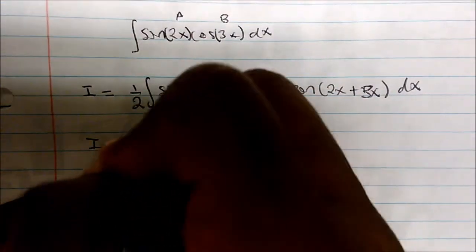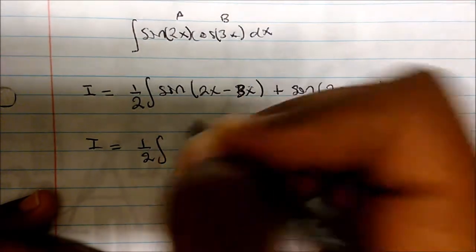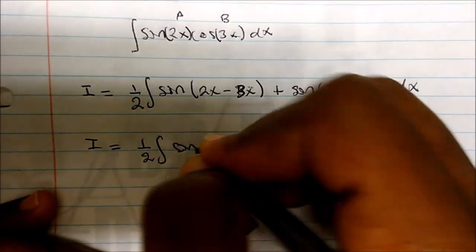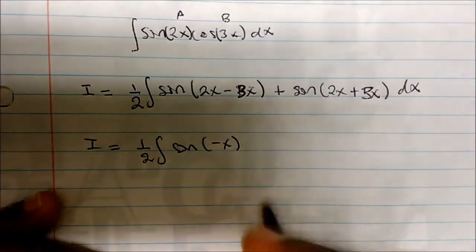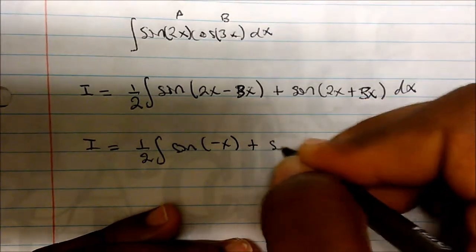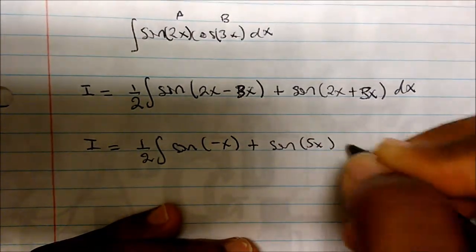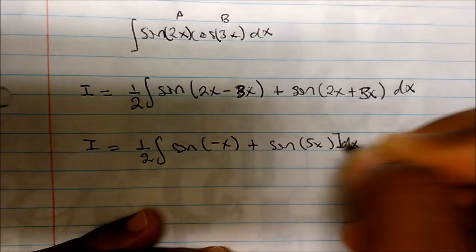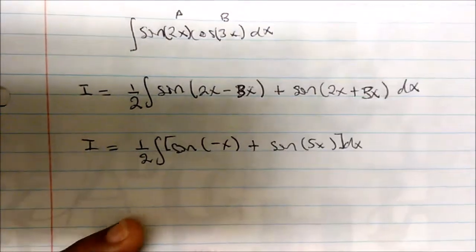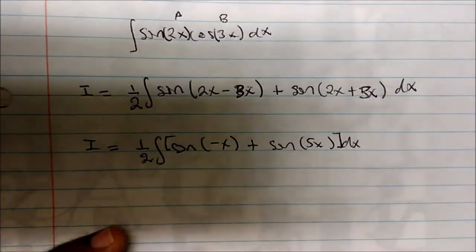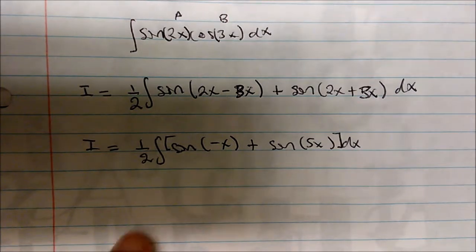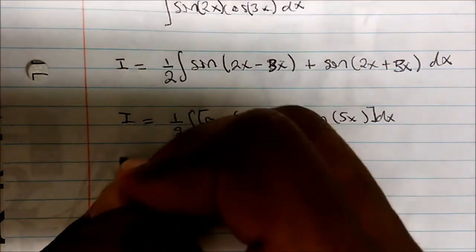So again, if we simplify this more, the integral is given by one half times the integral sine of negative x plus sine of 5x dx.